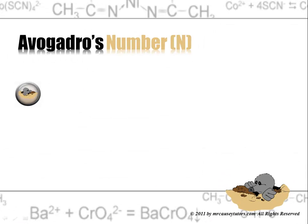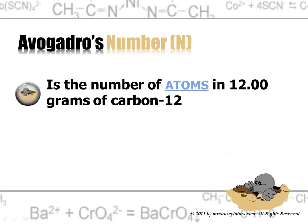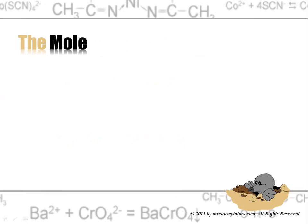Avogadro's number is the number of atoms in 12 grams of carbon-12. And so n which is the symbol for Avogadro's number is 6.022 times 10 to the 23. And it's times 10 to the 23 of anything. That's just what Avogadro's number is. Just like a dozen is 12. And we call that the mole.